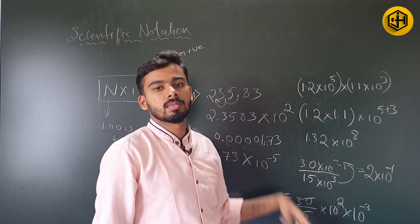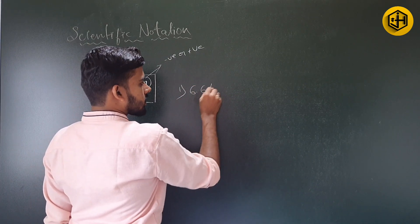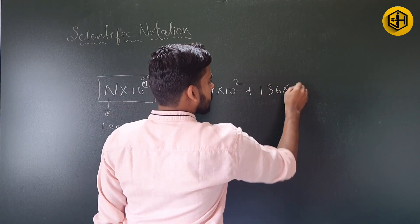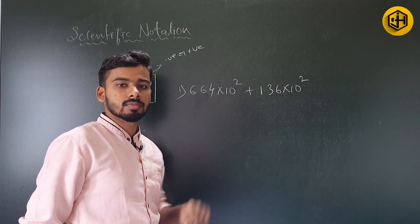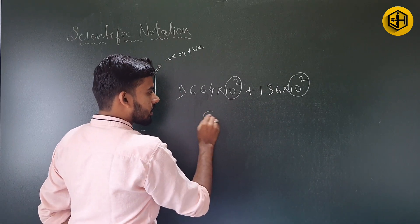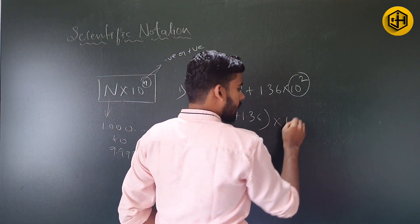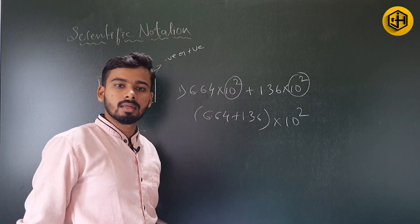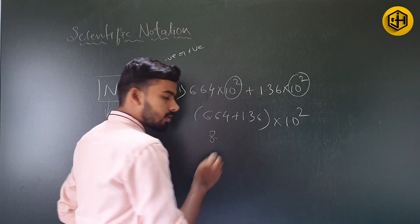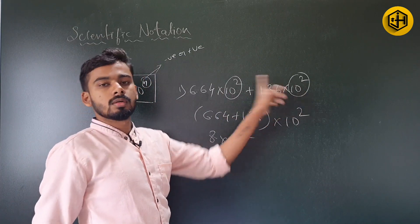Multiplication and division done similarly; we can also do addition and subtraction. For example: 6.64 × 10^2 plus 1.36 × 10^2. Since 10^2 is common, we take it outside: (6.64 + 1.36) × 10^2 = 8.00 × 10^2.